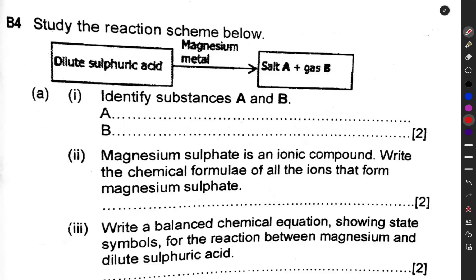You need to know how to define a salt and the different ways you can prepare salts. For this question, we are given specifically sulfuric acid reacting with a metal to produce a salt and a gas. When an acid reacts with a metal, what is normally produced is a salt and hydrogen gas.